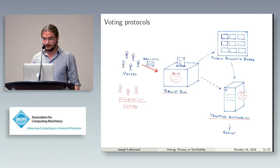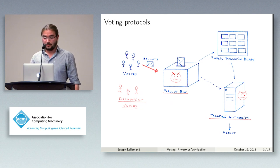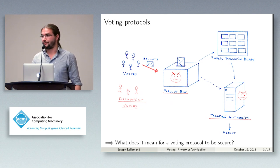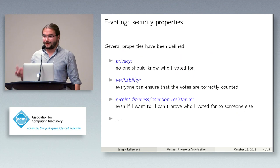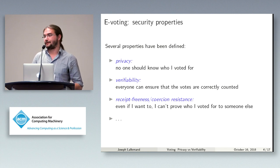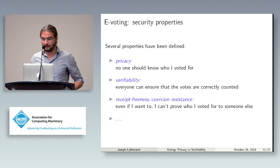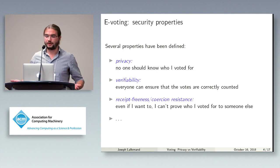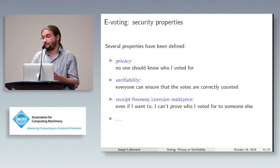With all these possible corruption scenarios in mind, what does it mean for a voting protocol to be secure? Several properties have been proposed to express the security of a voting scheme, notably privacy — the fact that no one should be able to know who I voted for — and verifiability — that everyone should be able to ensure that the published result corresponds to what the people wanted to vote, that the votes have been correctly counted.